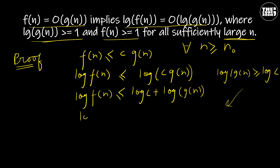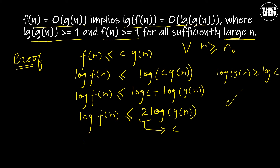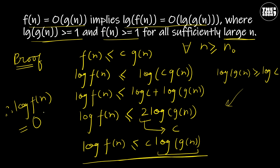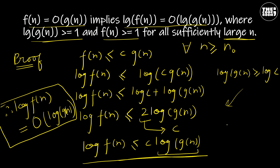From this we can write log f(n) ≤ log g(n). By writing 2 as constant c, we have log f(n) ≤ c·log g(n). Considering log f(n) as function 1 and log g(n) as function 2, this inequality satisfies the condition of our Big O notation. Therefore, log f(n) is the Big O of log g(n). Hence the property is proved.